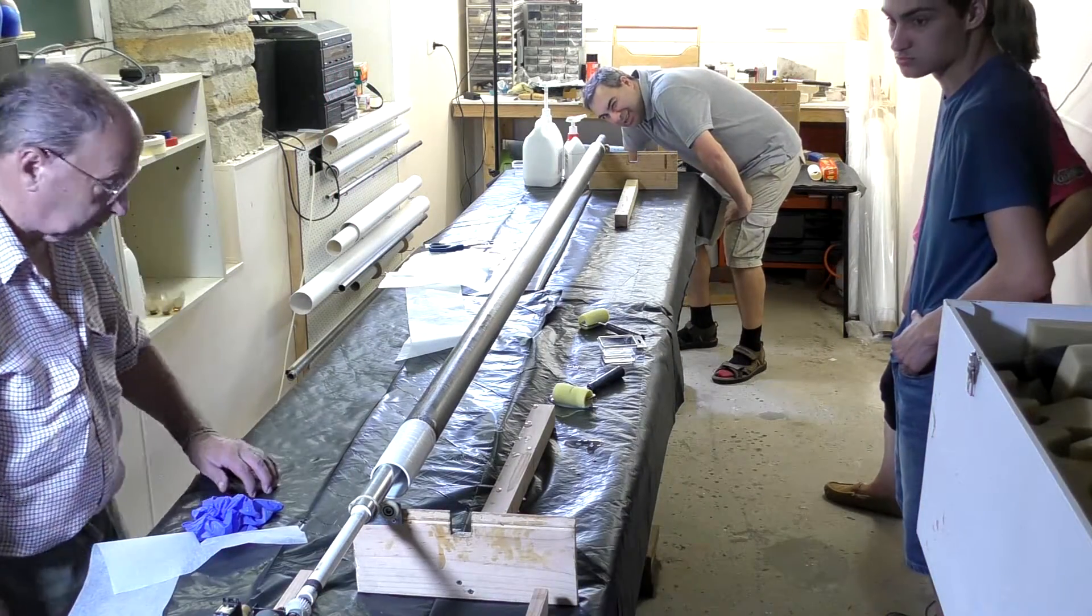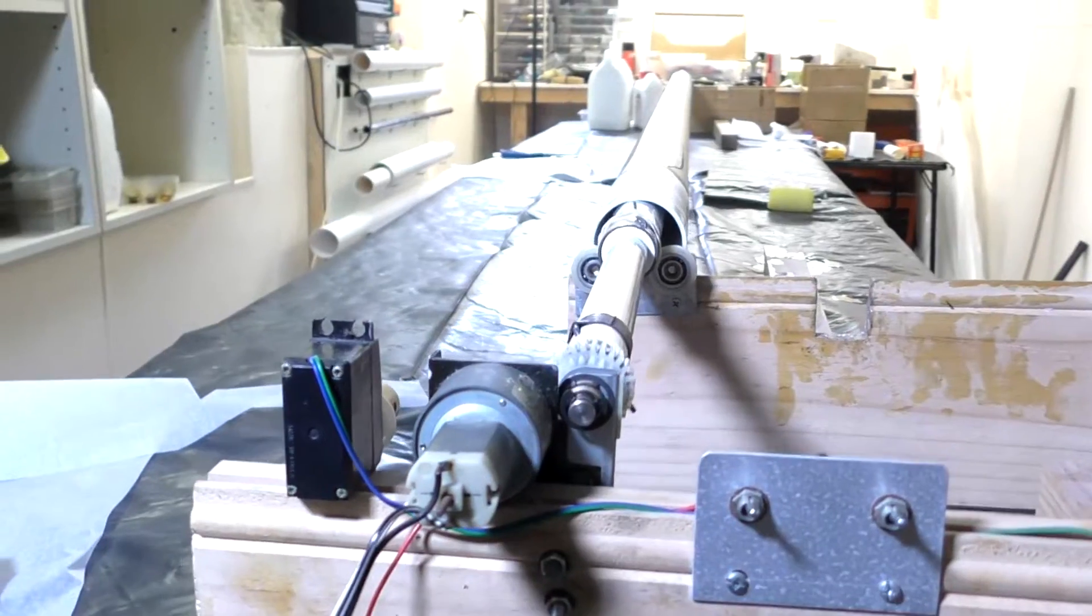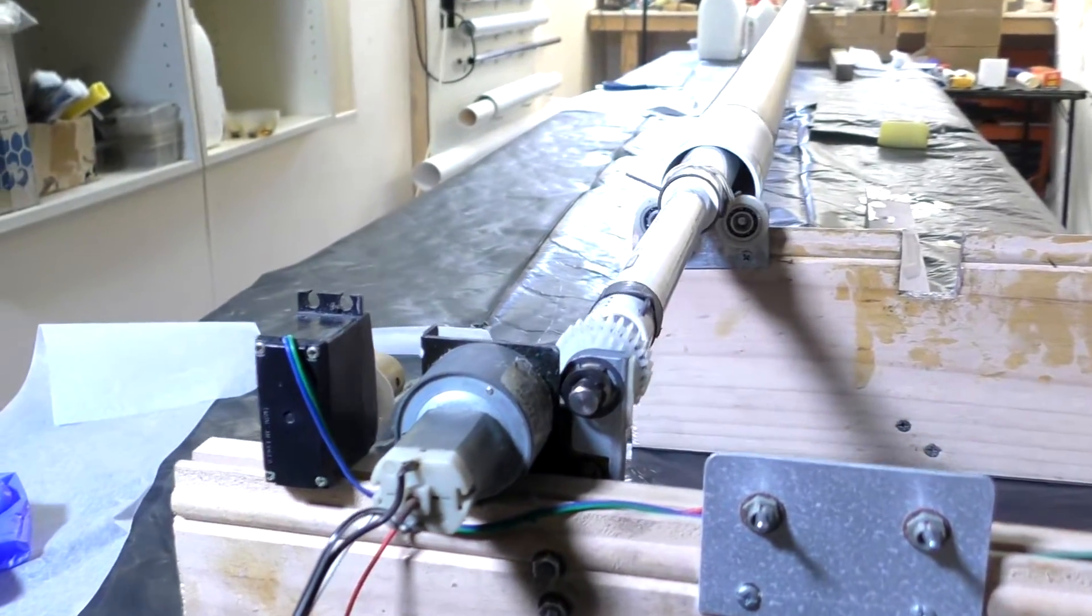Once that's done, we put it on the rotisserie while it cures. This prevents the epoxy from pooling on one side of the tube.